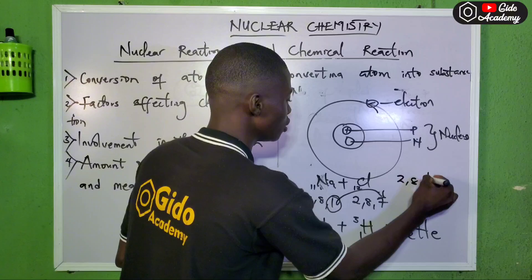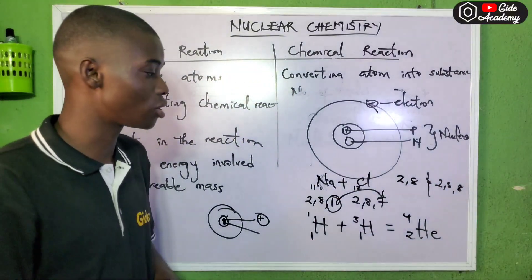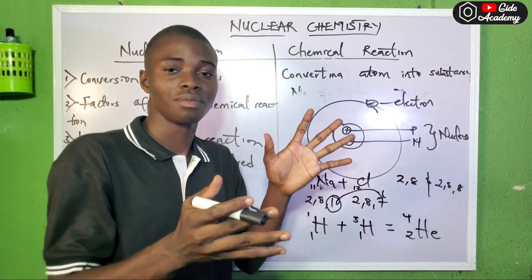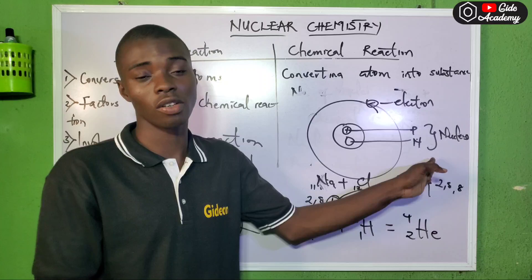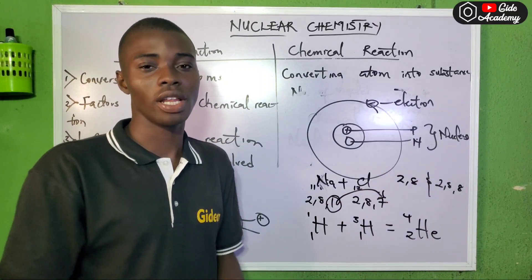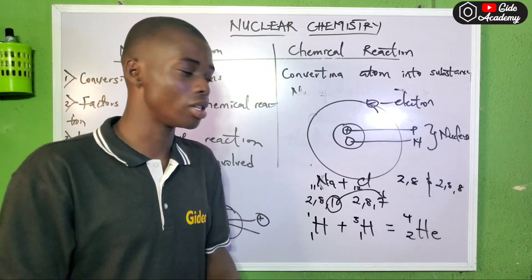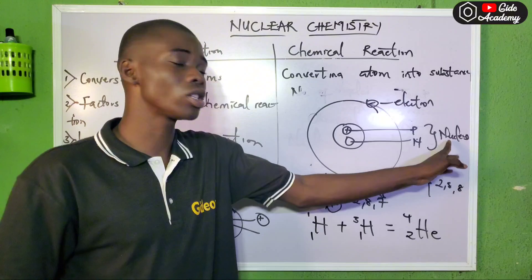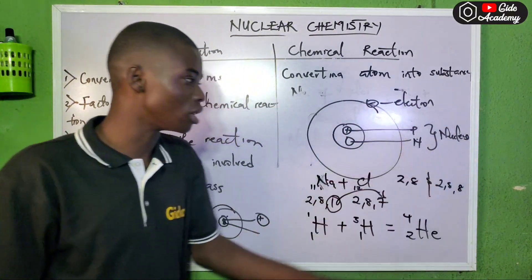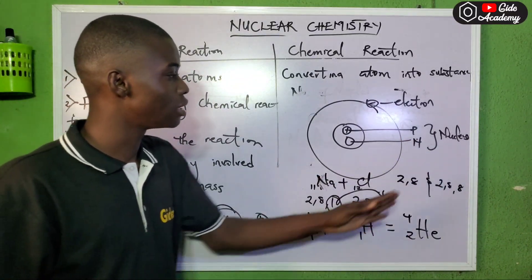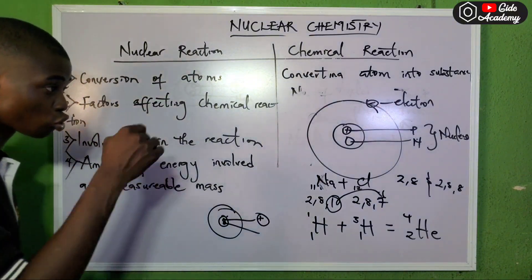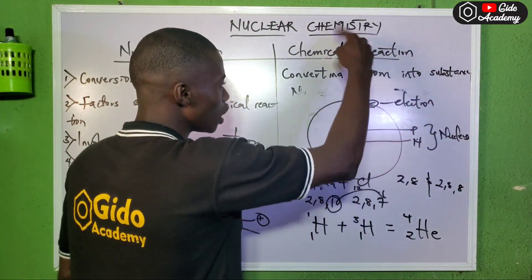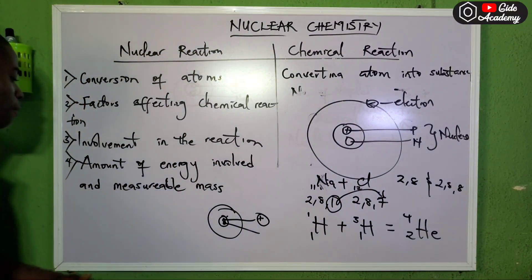Sodium gives out its electron to chlorine — it's not giving out a proton. So sodium becomes 2,8 and chlorine becomes 2,8,8, obeying the octet rule. In a chemical reaction, what you are doing is transferring electrons. The types of bonding — ionic and covalent — are the two main types. Under covalent, you have hydrogen bonds, dative bonds, polar bonds, and so on. For every chemical reaction, what takes part is just the electron. But for a nuclear reaction, what takes part is the nucleus — consisting of protons and neutrons — not the electron.